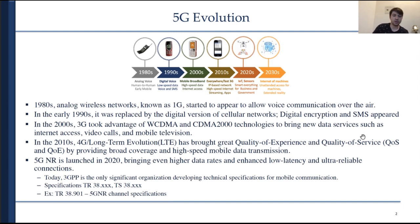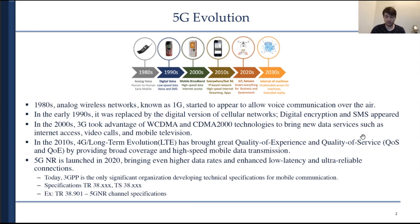Today the main organization developing technical specifications for mobile communication is called 3GPP — the Third Generation Partnership Project. They produce documents in open access, usually called TR or TS, starting with the number 38. TS is the Technical Specification and TR is the Technical Report. For example, TR 38.901 is the 5G NR channel specification, and in this tutorial I will often refer to those documents as they describe parameters and algorithms in great detail.